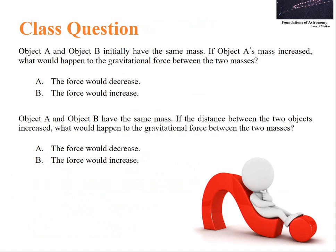Another class question: Object A and B initially have same mass. If object mass is increased, what would happen to the gravitational force between the two masses? The answer is the force would increase. Object A and B have same mass. If the distance between the two objects is increased, what would happen to the gravitational force between the two masses? Definitely the force would decrease because gravitational force is inversely proportional to the square of distance between two objects.